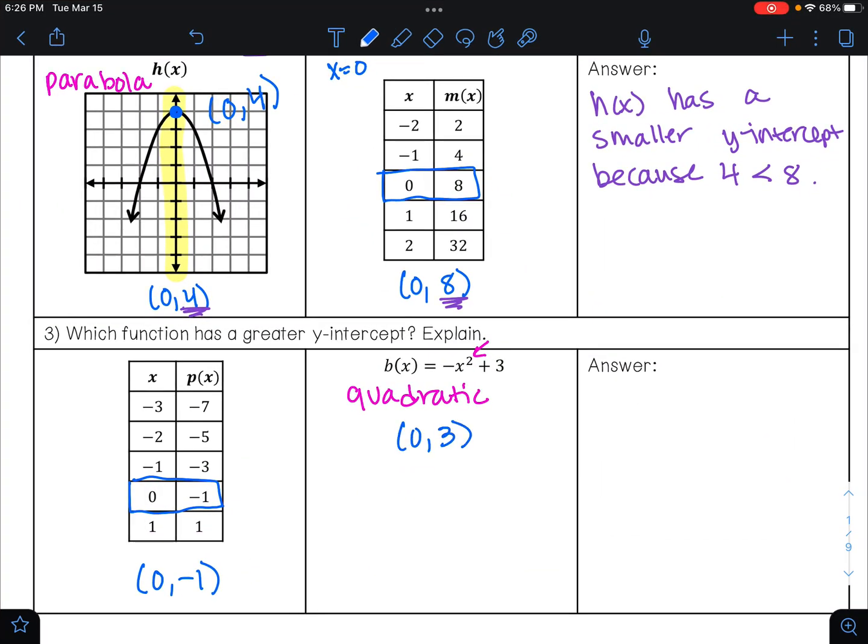We want to know which of these functions, p(x) or b(x), has a greater y-intercept. So which is greater, negative 1 or positive 3? Positive 3. So b(x) has a greater y-intercept because 3 is greater than negative 1.